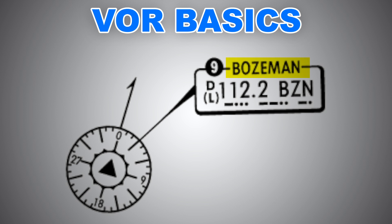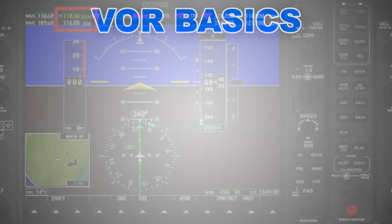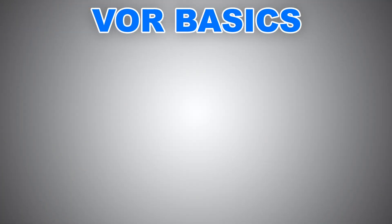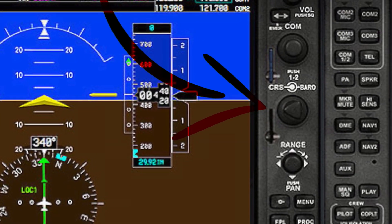Each VOR is identified using a station name, a three-letter station code, a three-letter Morse code, and a frequency. In order to use the VOR, you follow these three easy steps: tune, identify, and twist. First you tune in the frequency, then you identify. If your aircraft is G1000 or G3000 equipped, the Garmin will automatically identify the station and display the three-letter code in green next to the frequency box; otherwise you may need to identify the station using Morse code.